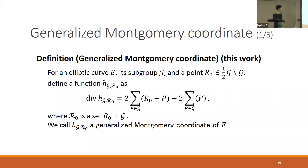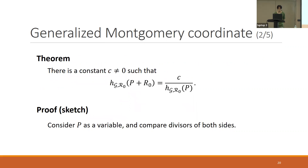Next I explain some important properties of this function. The first property: if we compute h_{G,r₀}(P + r₀), it is equal to c over h_{G,r₀}(P) for a nonzero constant c. We can prove this easily by considering the divisors of both sides of the equation. Since the divisors are the same, there is a constant value c satisfying this equation. By using this property, we can define the normalized generalized Montgomery coordinate: if the constant value equals one, we call it a normalized generalized Montgomery coordinate.